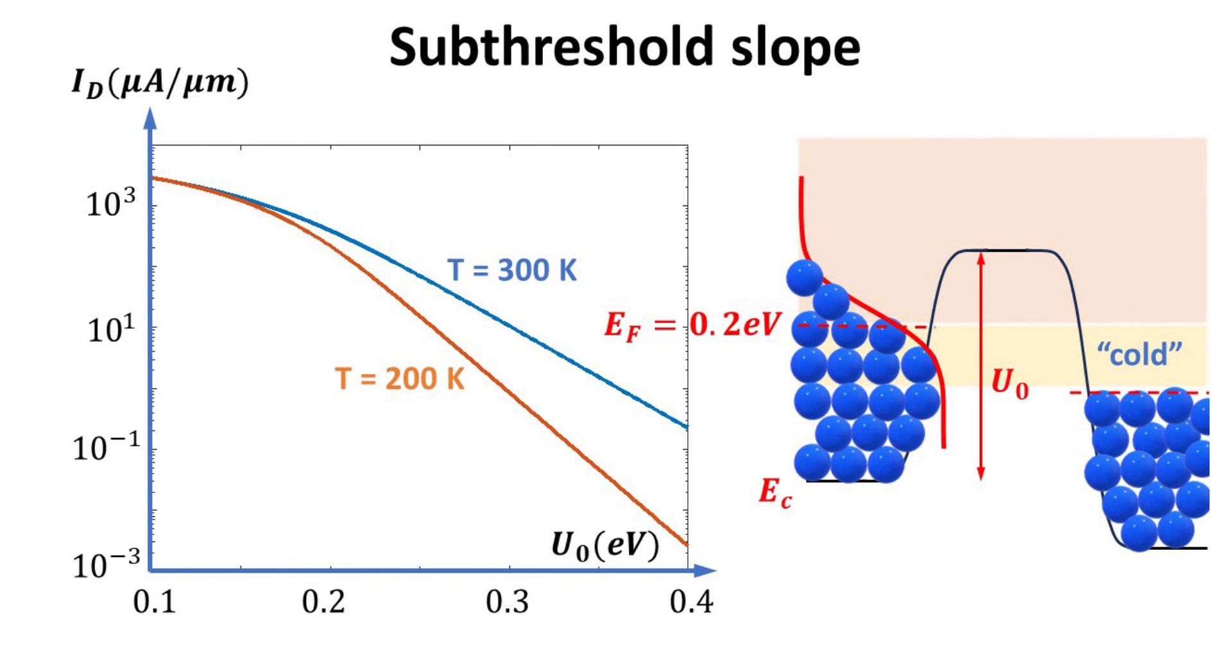Here, we plot the current as a function of the barrier height U0, ranging from 0.1 to 0.4 electron volts. Roughly speaking, when U0 is higher than EF, we are in the subthreshold regime, as highlighted in the plot. Indeed, the subthreshold slope is 60 millivolts per decade at 300 Kelvins.